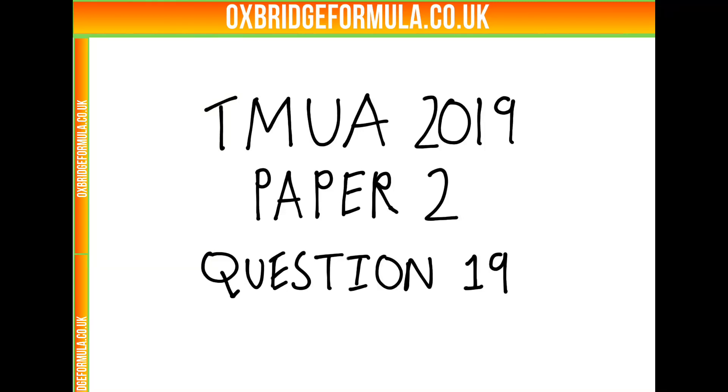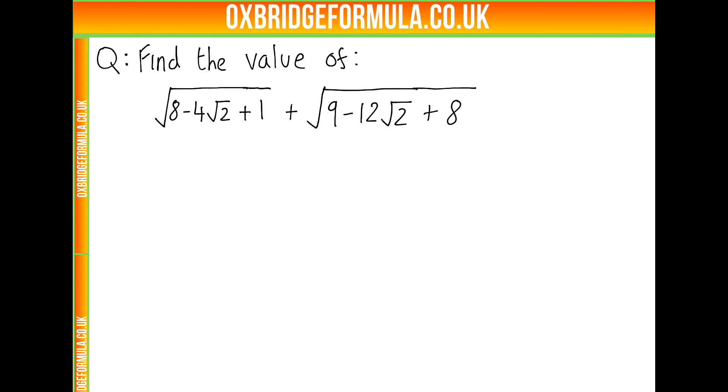This is the solution video for question 19 from paper 2 of the 2019 TMUA or CTMUA exam. In this question, we're asked to find a value of this messy expression, and we're given seven different numerical options for what it evaluates as.